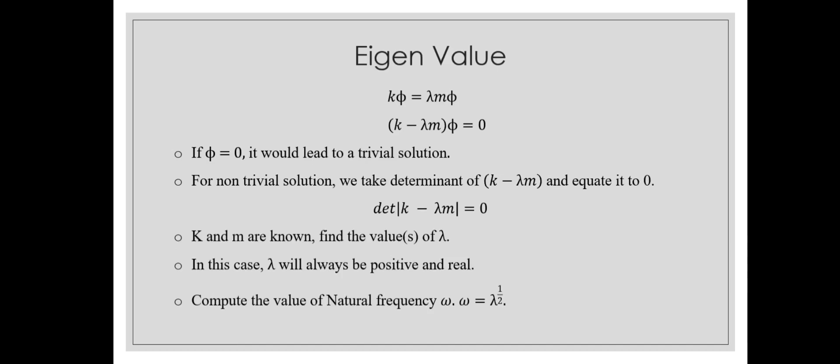To find eigenvalues and eigenvectors: from k phi equals lambda m phi, rearranging gives k minus lambda m times phi equals zero. Either k minus lambda m or phi has to equal zero to satisfy this condition. If phi equals zero, it leads to a trivial solution — meaning the particles are not vibrating at all and the structure is stationary. We want a non-trivial solution, so we take the determinant of k minus lambda m and equate it to zero. Since we know stiffness and mass, the only unknown is lambda. This leads to a simultaneous equation yielding the eigenvalues. Lambda will always be positive and real because there is no damping. Natural frequency is the square root of the eigenvalue.